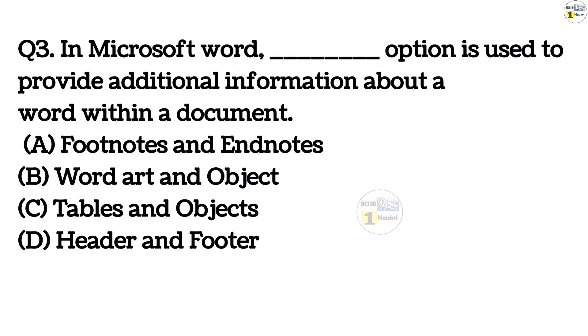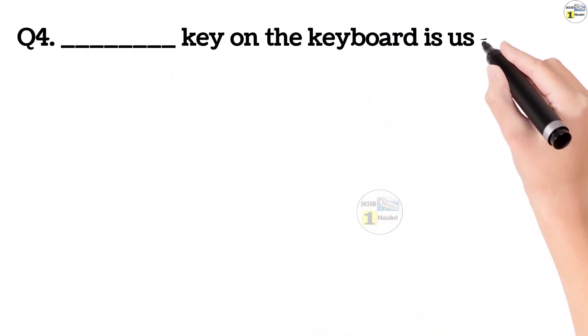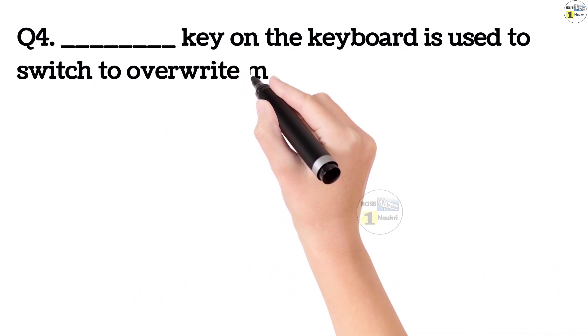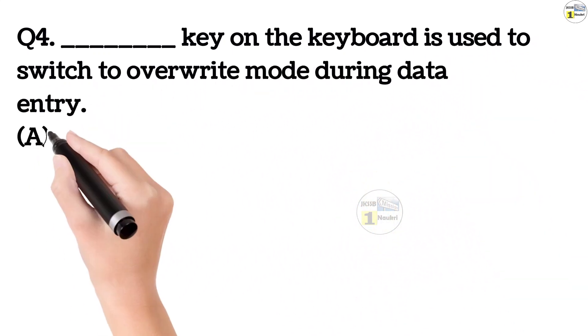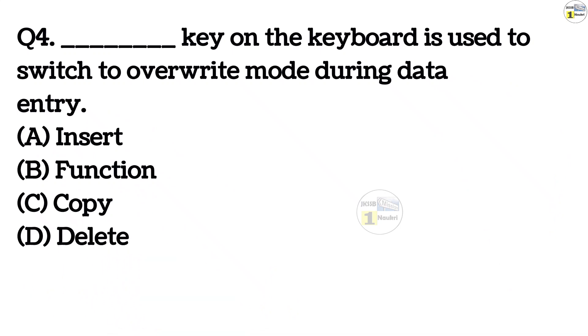Question number 4. Dash key on the keyboard is used to switch to overwrite mode during data entry. Option A, insert. Option B, function. Option C, copy. Option D, delete. The right answer is option A, insert.